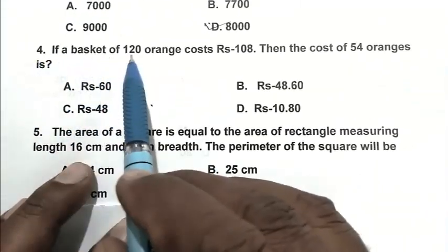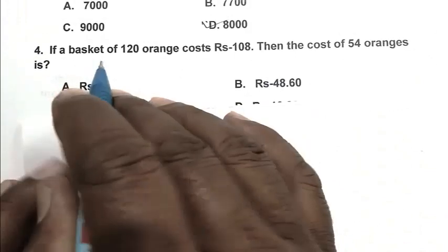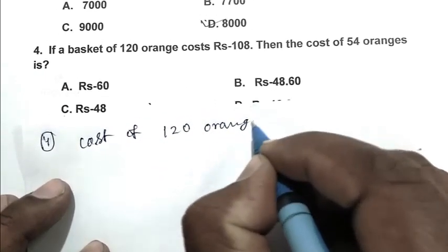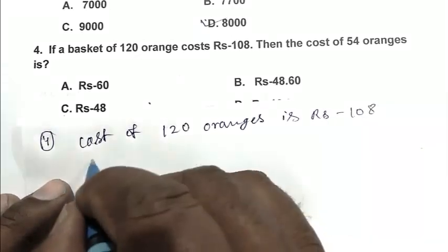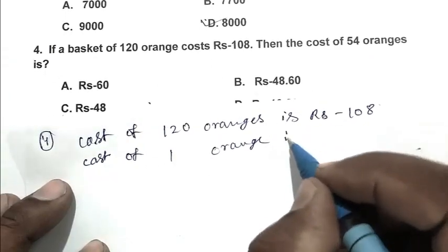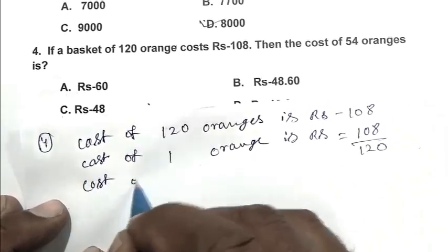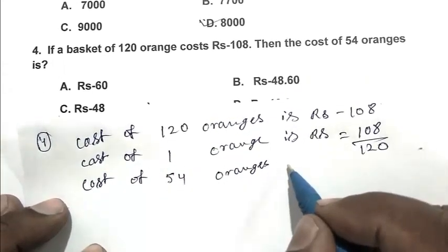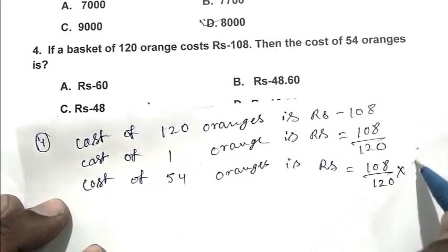Question number 4: If a basket of 120 oranges costs rupees 108, then the cost of 54 oranges is. Cost of 120 oranges is rupees 108. Cost of 1 orange is rupees 108 divided by 120. Cost of 54 oranges is rupees 108 by 120 multiplied by 54.